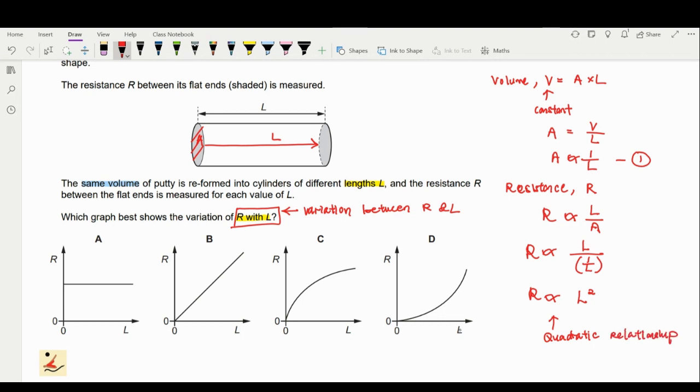The quadratic relationship you have from the options is D, so D will be the correct answer for this one.